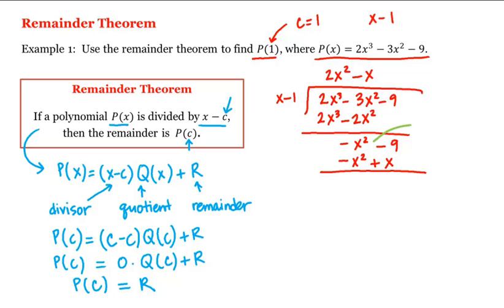Let's think of there being a plus 0x here as a placeholder. So when we subtract we have 0x minus x, or negative x, and then we still have the negative 9. x goes into negative x, negative 1 times. Negative 1 times x minus 1 is negative x plus 1.